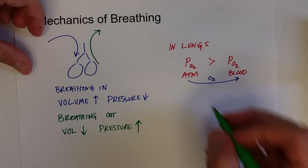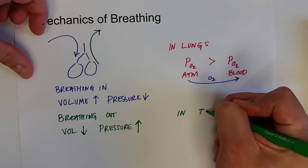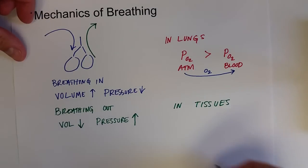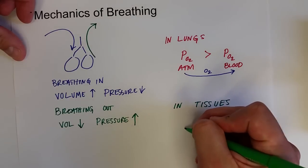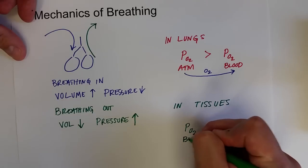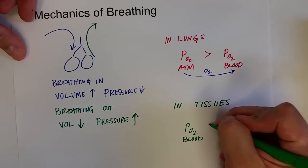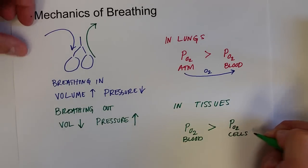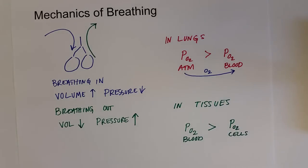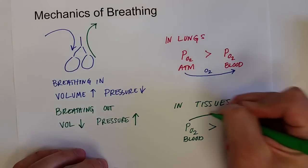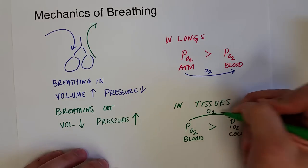In our tissues, that oxygenated blood is delivered to our cells, where it is used for cellular respiration. The partial pressure of oxygen in the oxygenated blood is greater than the partial pressure of oxygen inside the cells where it is needed. Just like air flows from high pressure to low pressure, oxygen flows from high pressure to low pressure — and that's how we deliver oxygen into our cells.